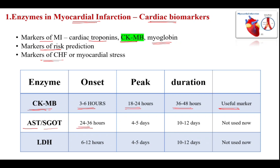Next, AST or SGOT: onset is 24 to 36 hours, it peaks for 4 to 5 days, and the duration for which it remains in the serum is 10 to 12 days. It is not used now as a marker of MI. Lactate dehydrogenase appears in the serum within 6 to 12 hours,